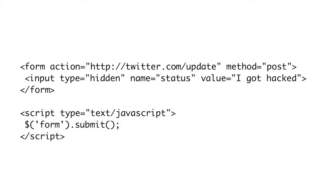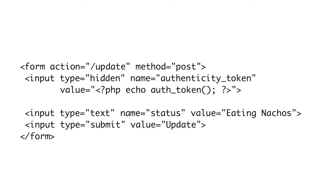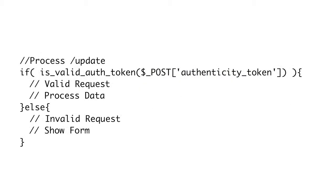Just refusing GET requests doesn't protect you fully. A malicious page could have just as easily created a form with Twitter as the action, POST as the method, and the fields as hidden inputs, and submitted it through JavaScript. It would be a POST request coming from Nick's browser with Nick's credentials, and would have created the tweet successfully. To protect against this attack, we want to create a secret value — an authenticity token — that an attacker could not possibly guess. We then put that value as a hidden field in our legitimate forms. When we process our forms, we check for that authenticity token, and if it's missing or invalid, we discard the request.